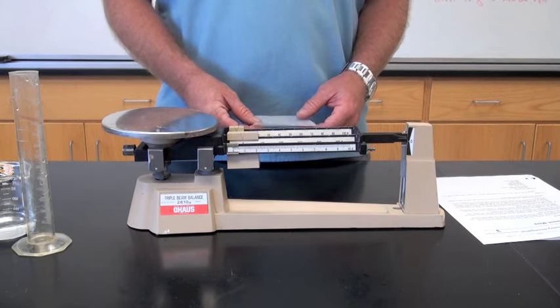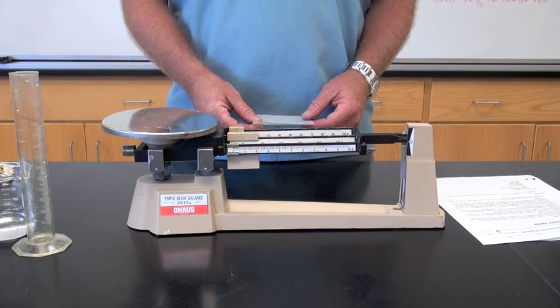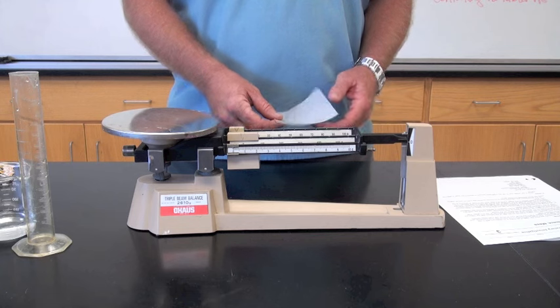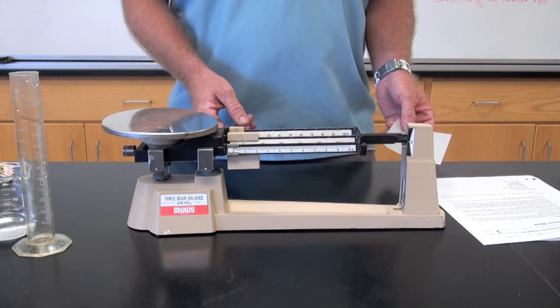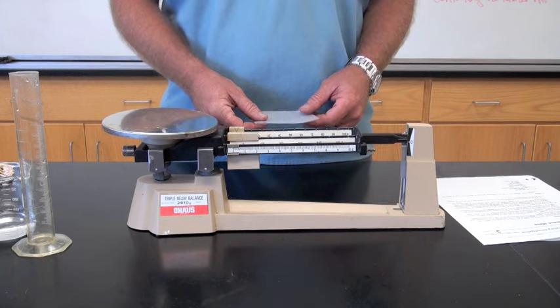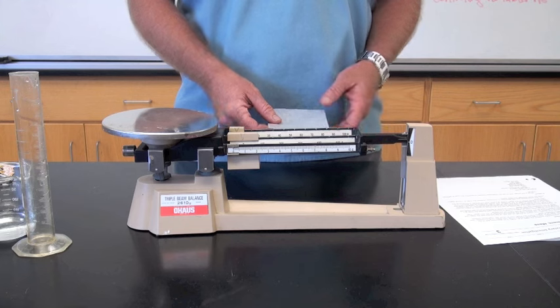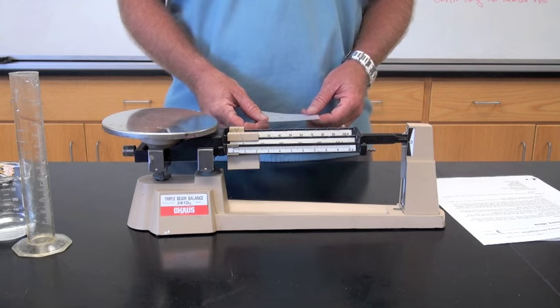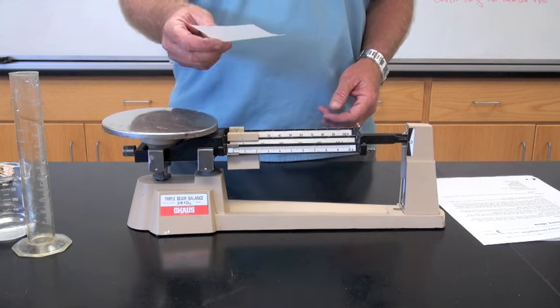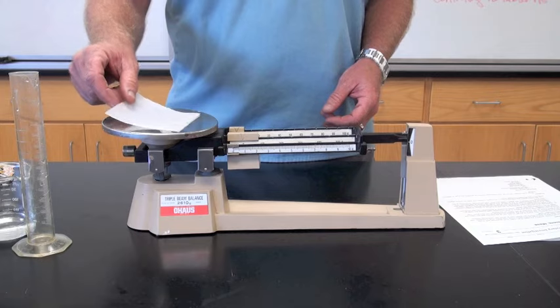The third way you can use a triple beam balance is to measure out a certain amount of a substance. It is necessary to use this procedure to obtain the exact amount of a solid chemical substance. Chemicals should never be placed directly on the balance pan, so it's necessary to first find the mass of weighing paper or container. Here's my weighing paper.